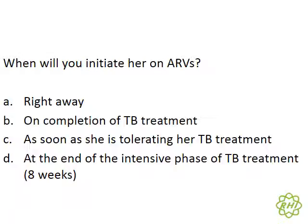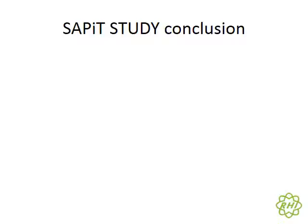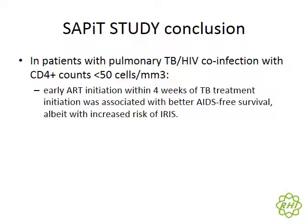There is a very specific trial that informs the guideline regarding how soon we start ARVs. It was called the SAPIT study. It divided into several arms looking at starting ARVs earlier, after the intensive phase, or even after TB treatment. The study found that in patients with pulmonary TB or HIV co-infection with very low CD4 counts, or very sick patients, early ART initiation within about four weeks of TB treatment initiation had better AIDS-free survival.